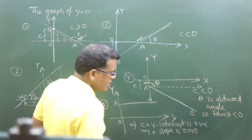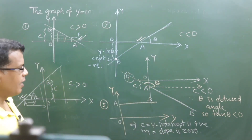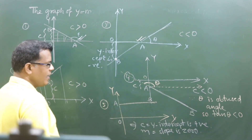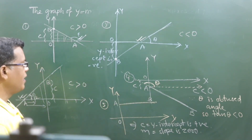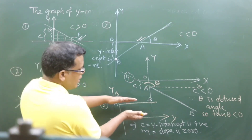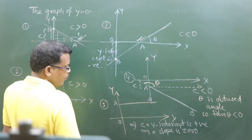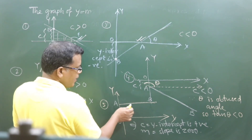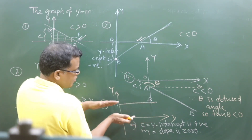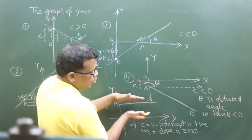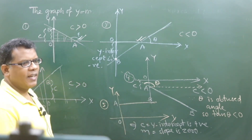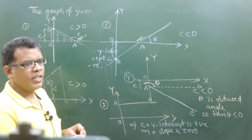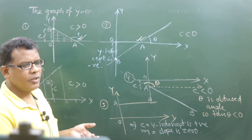Why can we say slope is 0? Because, as I said, when the line is parallel with the x-axis — anything which is parallel with the x-axis — if I need to decide the angle made by this line with the positive direction of the x-axis, between two parallel lines, what will be the angle?